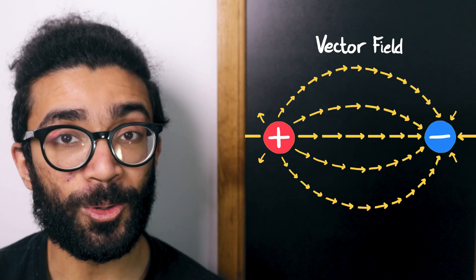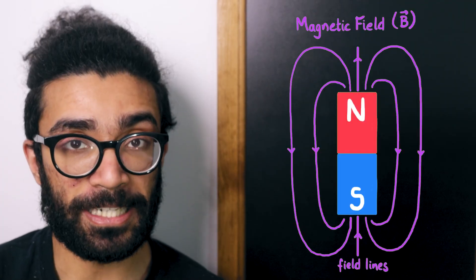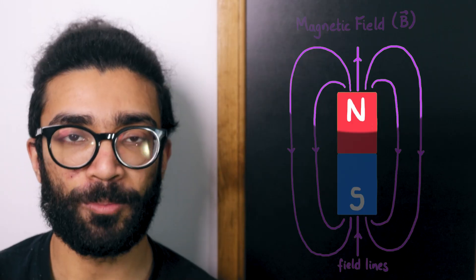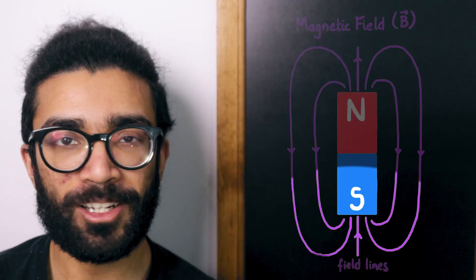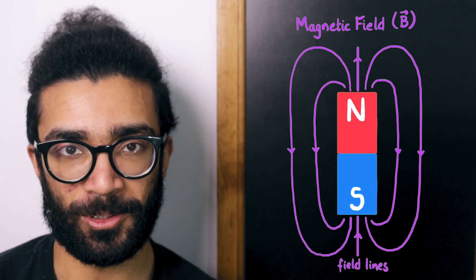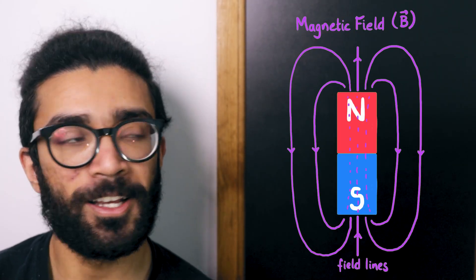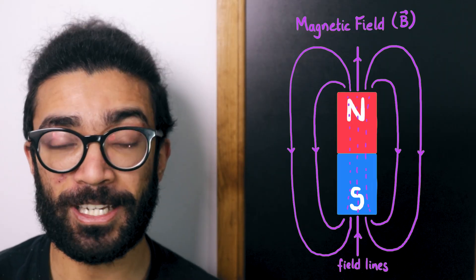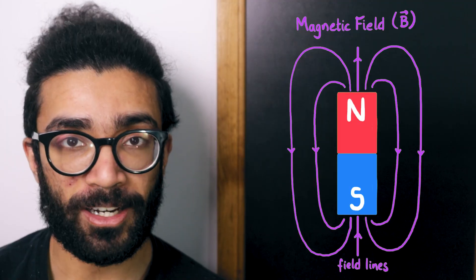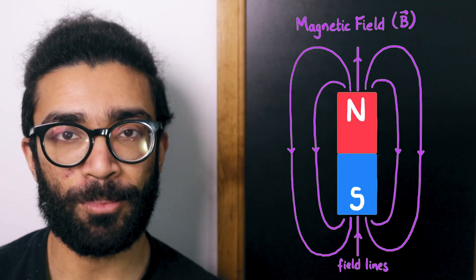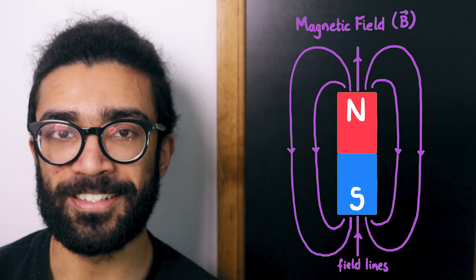Similar to electric fields, we can also think about magnetic fields. Our chosen convention is that magnetic field lines emanate from the north pole of a magnet and they are absorbed into the south pole. Magnetic field lines are a little bit more complicated than electric field lines in that there can also be magnetic field lines inside our magnet. But if we just think about what's happening outside the magnet, then our magnetic field lines for this particular bar magnet look like this — they essentially begin at the north pole and end at the south pole.